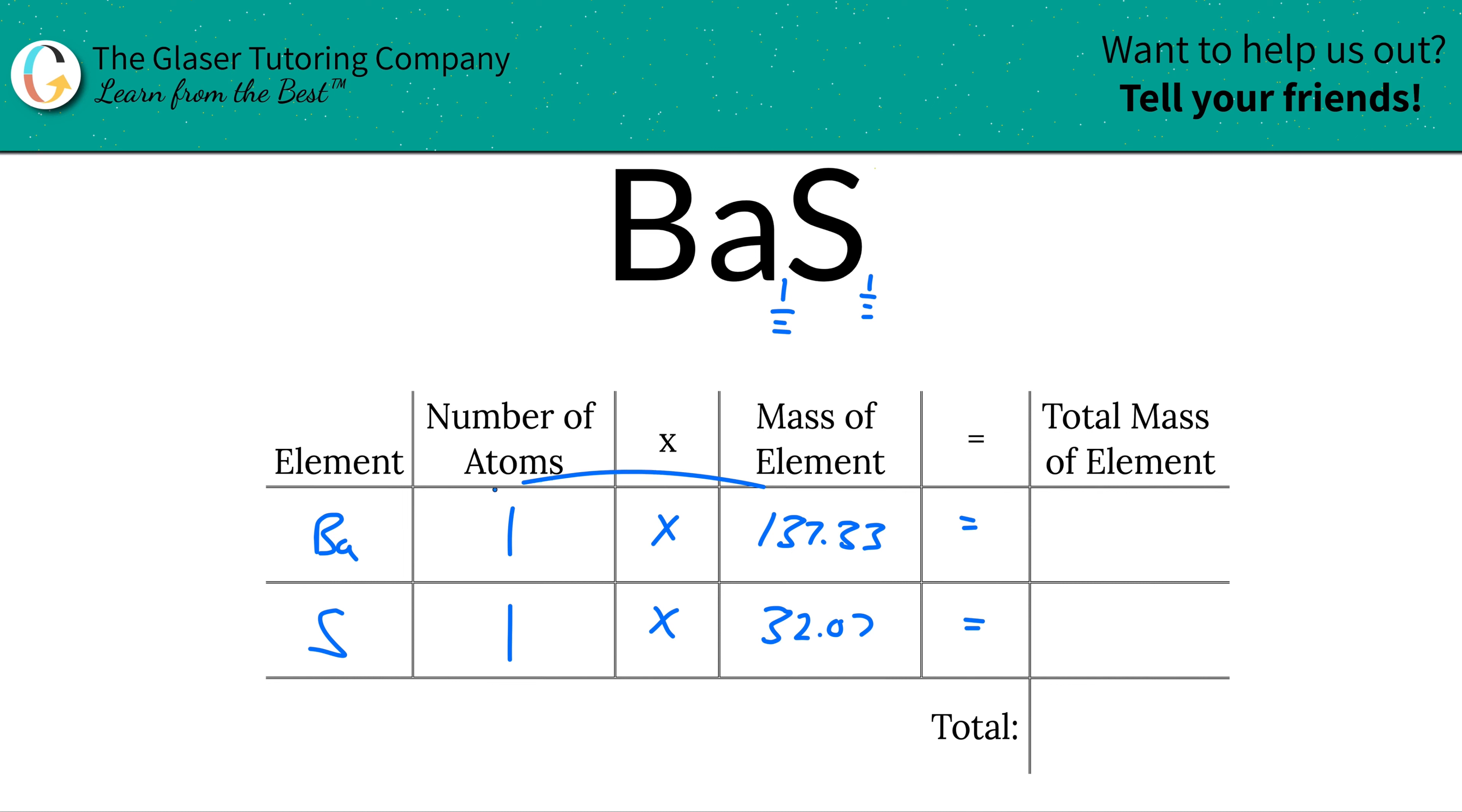All we have to now simply do is multiply this row across to find the total mass of that particular element of the compound. So the total amount of barium there in the compound is 137.33, right? That's easy. And then same thing for sulfur, it's just 1 times the 32.07.